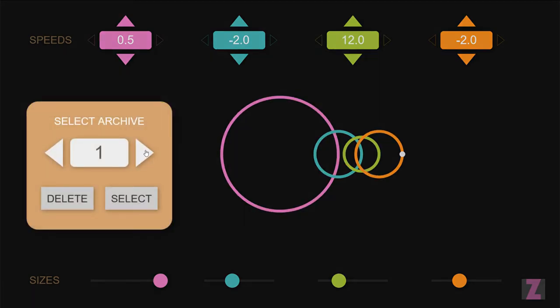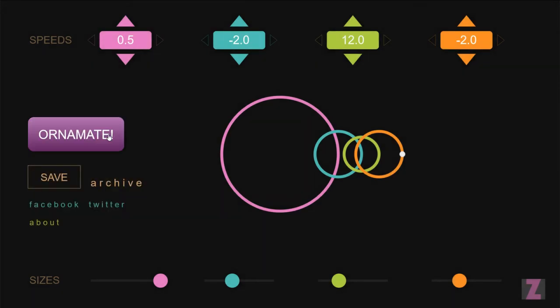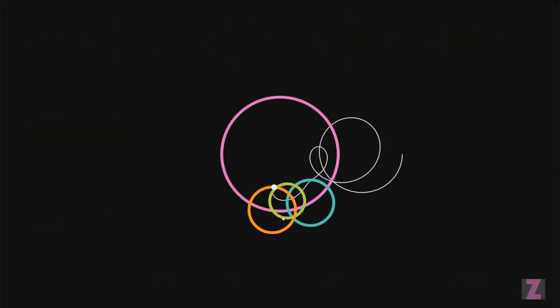What have we got in the archives? Oh, just two. This one. So I guess we'll select that one. And we can Ornimate it and see what it makes. Whoo!